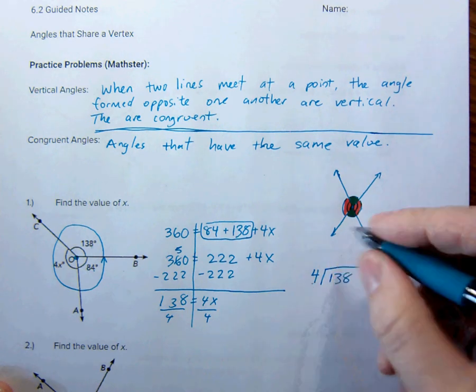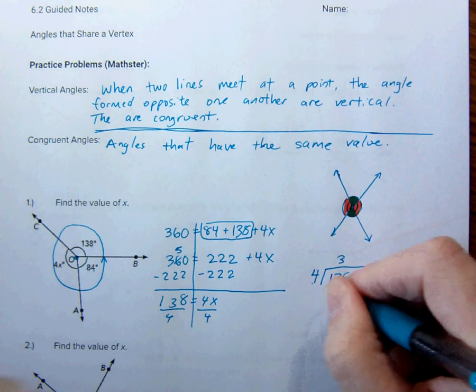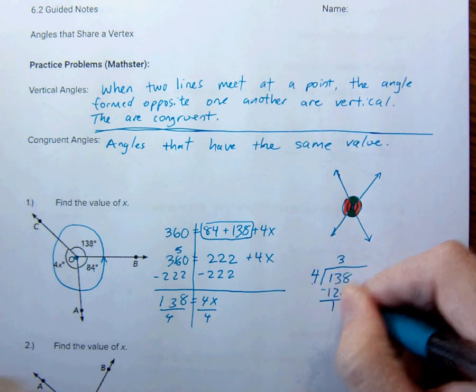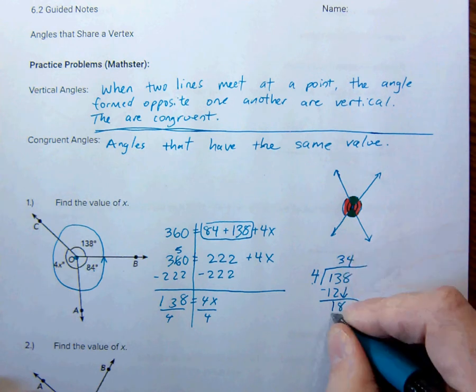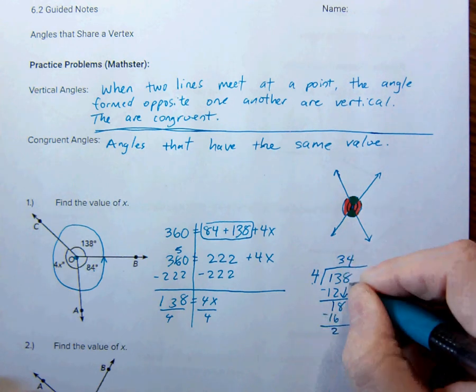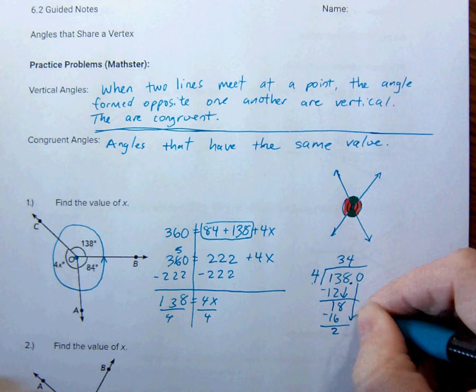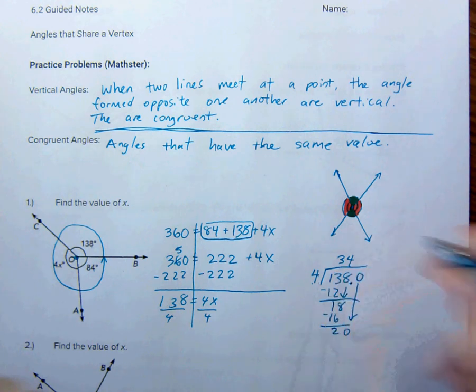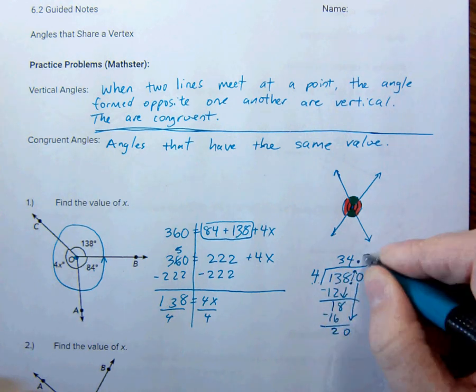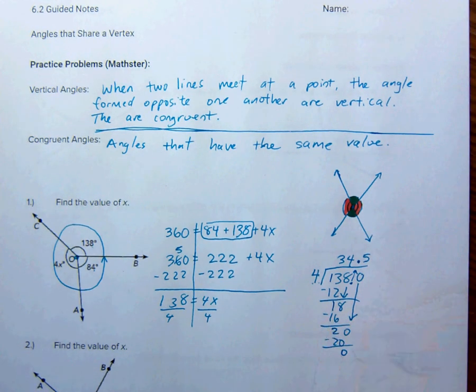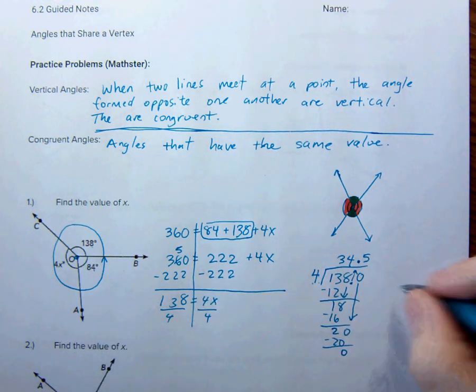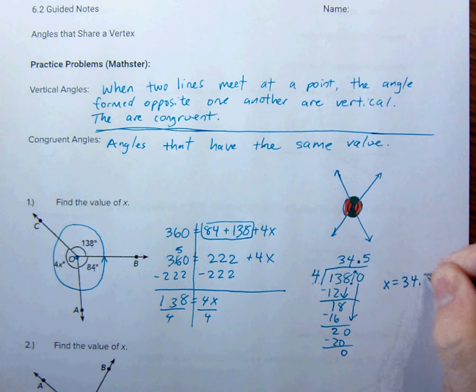Let's go ahead and just divide. 138. 4 goes into 13 three times. That's 12. Subtract 1. 4 goes into 18, that's 4 times. That's 16. I have two left. So let's go ahead and add that 0. 20. 4 goes into 20. Remember to keep our decimal. 5 times. So 34.5 is what x is equal to. So x equals 34.5.